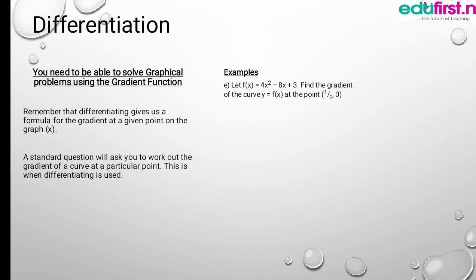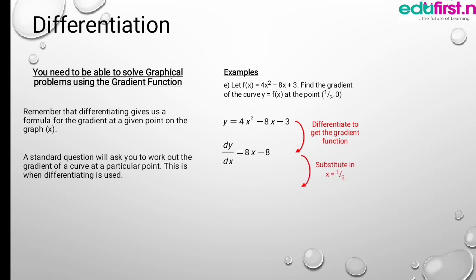Another example: let f(x) equals 4x squared minus 8x plus 3. Find the gradient. All you need to do is differentiate. After differentiating, 3 is the constant, so we only have dy/dx equals 8x minus 8. Now substitute x equals one half: f'(1/2) equals 8 times one half, which gives 4 minus 8. Then f'(1/2) equals 4 minus 8, giving minus 4.